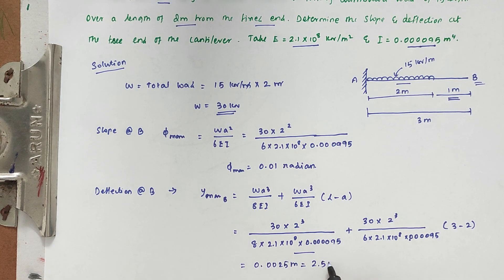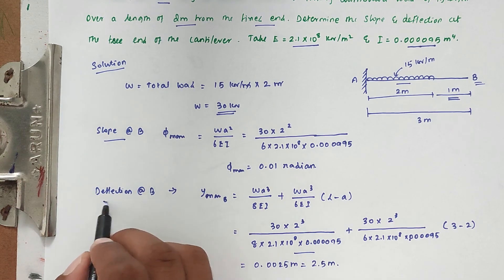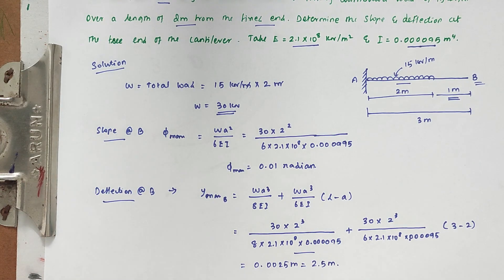So the deflection at B is 0.0025 meters, which is 2.5 mm. The slope is 0.01 radians and the deflection is 2.5 mm. This is the method to solve the problem. We will see you in the next video. Thank you.